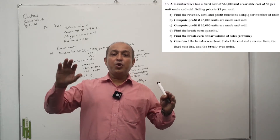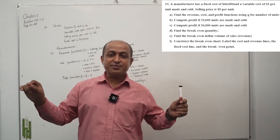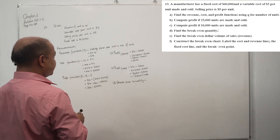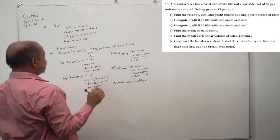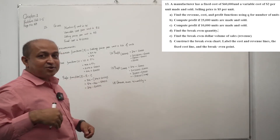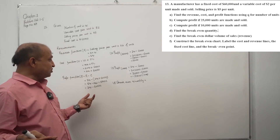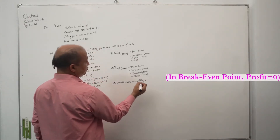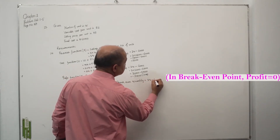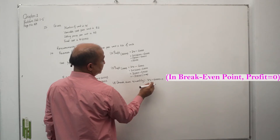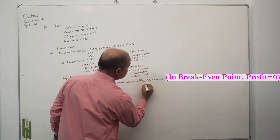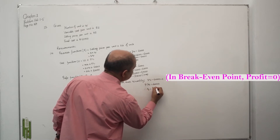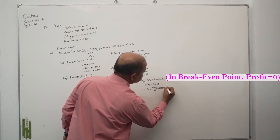Breakeven means no profit, no loss — revenue equals cost, so profit equals zero. To find breakeven quantity, set the profit function equal to zero: 3Q minus 60,000 equals zero, so 3Q equals 60,000, therefore Q equals 60,000 divided by 3, which equals 20,000 units.